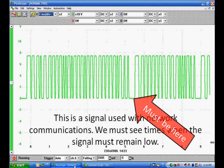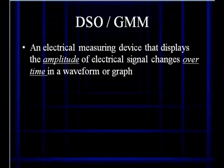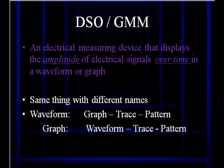If we define a DSO in a graphing multimeter, it's an electrical measuring device that displays the amplitude of an electrical signal as it changes over time. It's in a waveform or graph format. Now, we can call them graphs, we can call them traces, we can call them patterns, we can call them waveforms. Whatever you want to call them, they all mean the same thing. We're going to look at this pattern.